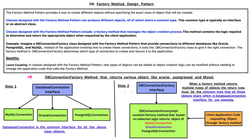Below is the Pictorial Diagram of DBConnectionFactory, which creates various objects like Oracle, PostgreSQL, and MySQL database connection objects. In Step 1 of this Pictorial Diagram, we have the DatabaseConnection interface. This interface is implemented by three classes: MySQL connection, Oracle connection, and PostgreSQL connection. DatabaseConnection is the common interface for all of the above class objects.